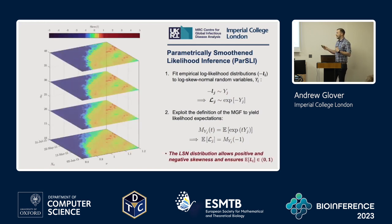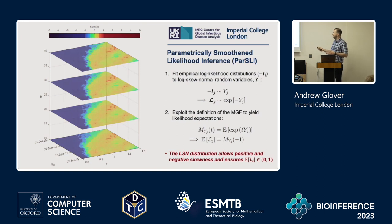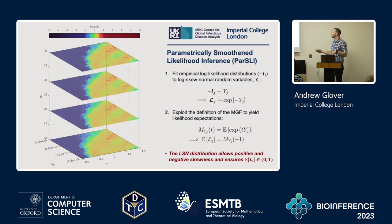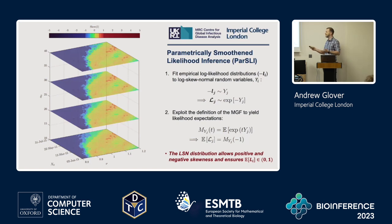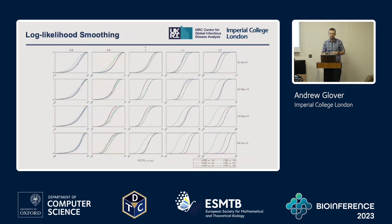Why a log skew normal distribution? Because it allows positive and negative skewness — this is looking at the skewness of the empirical log likelihoods over the 3D parameter space. Also, because the log skew normal has support defined over the real line, fitting to the negative log likelihoods ensures the expectations of the likelihoods are bounded between zero and one, so we're not violating any probability constraints.